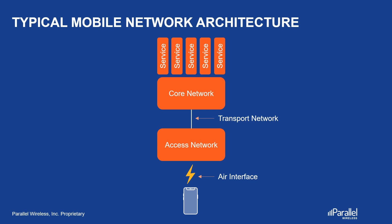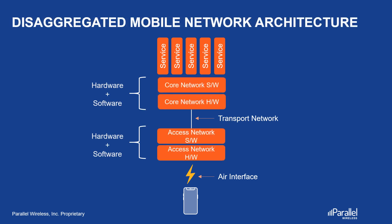On top, there are services that run on the core network. The core network as well as the access network contain hardware and software. When we talk about disaggregated mobile network architecture, this is when the hardware and software are disaggregated or separated. This applies to both the access network and the core network.